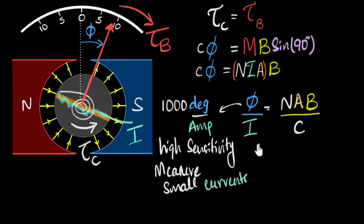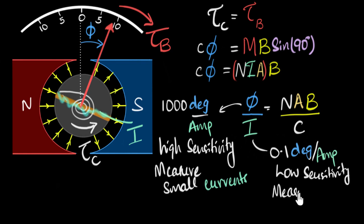On the other hand, what if this value was low? Maybe, say, 0.1 degree per ampere. What does this mean? Well, this would mean now if you put one amp of current, you get a very tiny amount of deflection. So it's not very sensitive to current. So you can use this to measure a lot of current, about hundreds of amps of current. So this is low sensitivity. And use this to measure high currents.